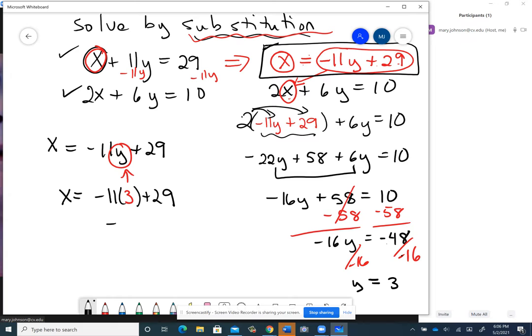Then negative 33 plus 29 would equal negative 4. So x was negative 4. Y was 3.